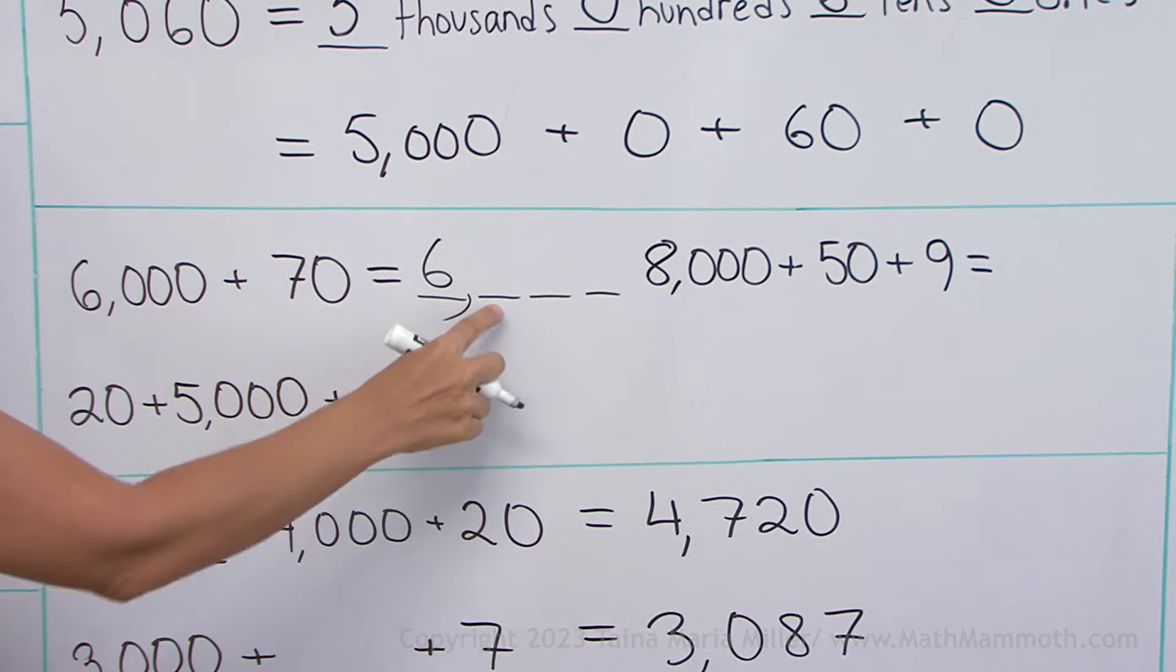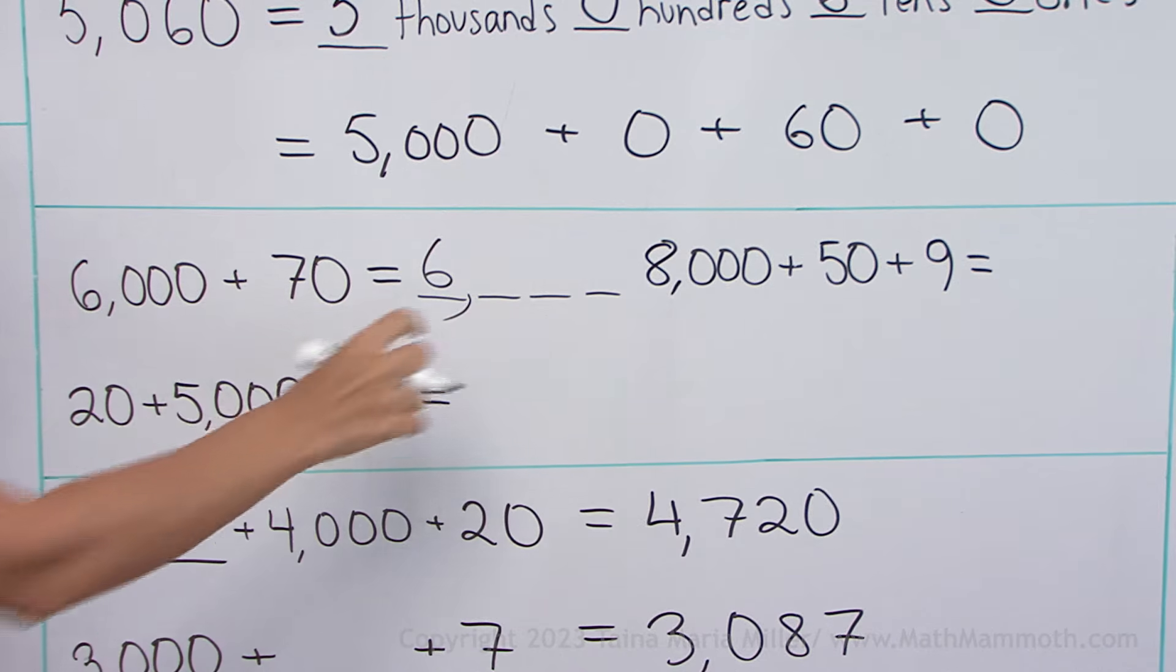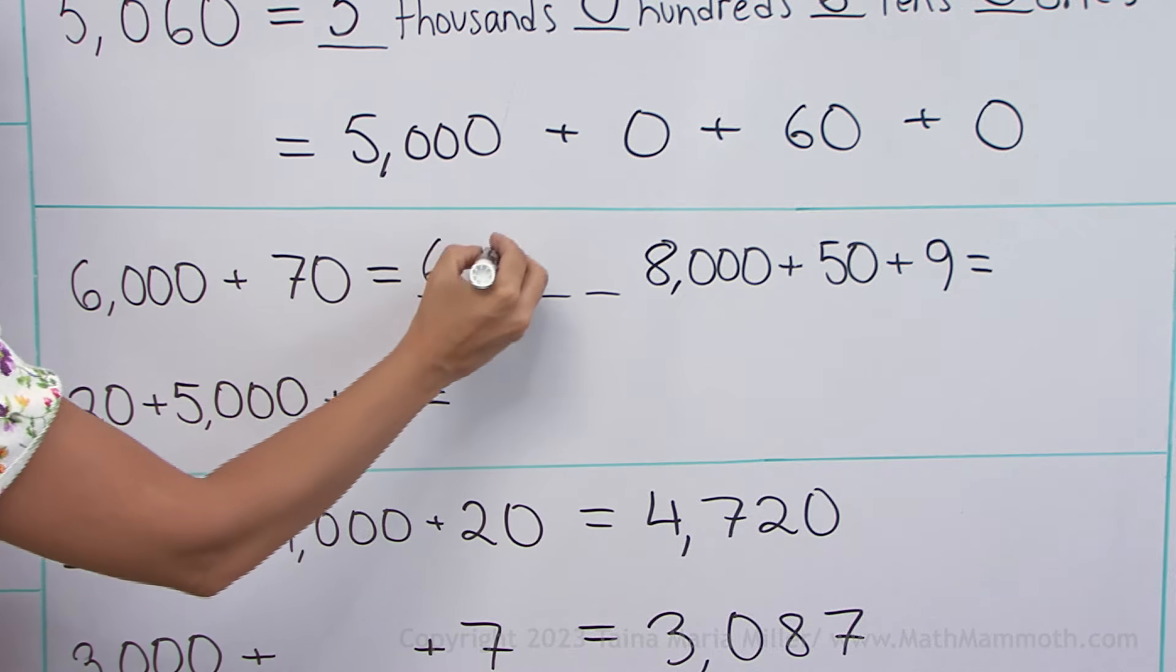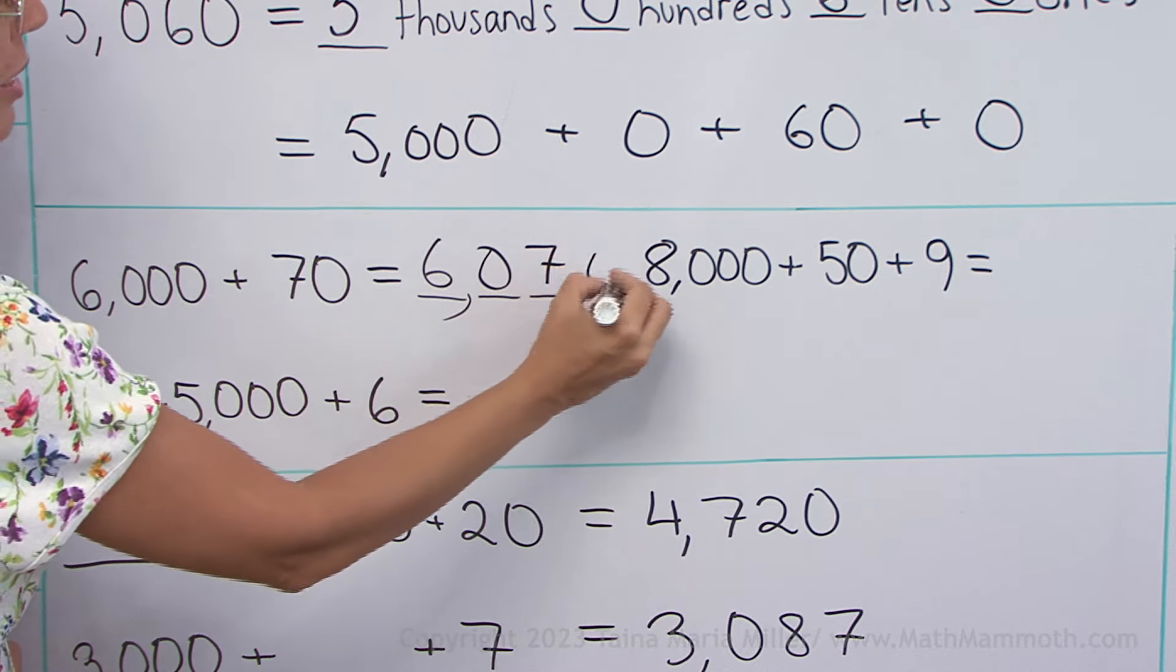Six thousand and then here comes the hundreds digit. How many hundreds? No hundreds. And then you write the seventy or seven and zero.